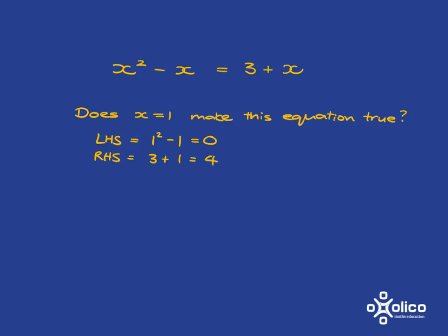So when we've worked this one out here, what we get over here is 0, what we get over here is 4, and those two things are definitely not equal to each other. So putting in x equals to 1 has not made this equation true, because for it to be true, it would have to be that the answers were equal to each other. So we can say very clearly, no.